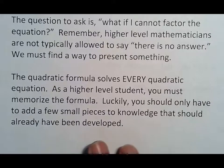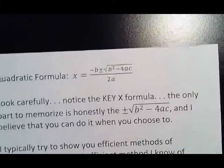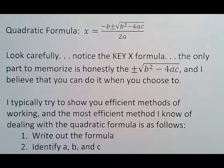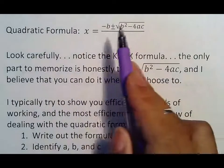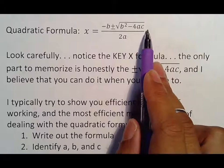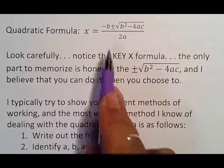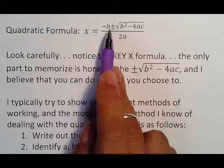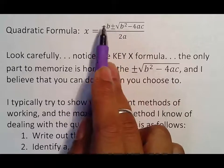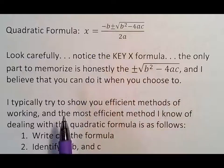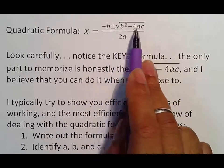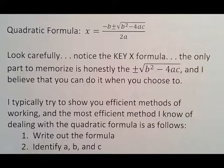Luckily, you should only have to add a few small pieces to that knowledge that should have already been developed. So it is a formula. You do have to memorize it. But hopefully when you see it, you'll recognize some of the stuff because you have seen it before. Your quadratic formula is x equals negative b plus or minus square root of b² - 4ac all over 2a. If you look carefully, you should notice the key x formula, negative b over 2a. So the only part to honestly memorize is the plus or minus b² - 4ac. And I believe you can do that.